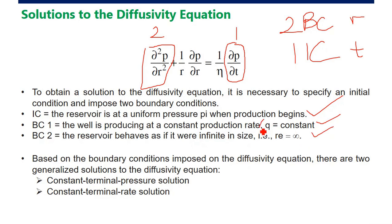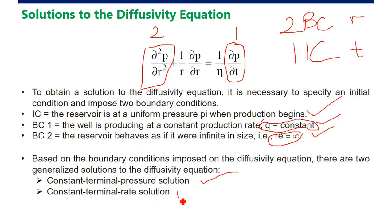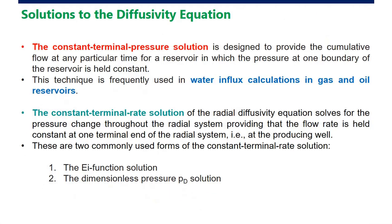The initial condition states that the reservoir is at a uniform pressure when production begins. The first boundary condition is that the well is producing at a constant production rate. The second boundary condition is that the reservoir behaves as if it is infinite in size — Re is mathematically infinite.